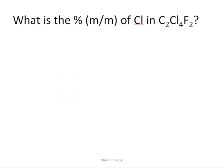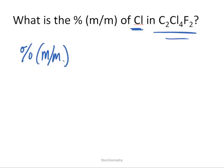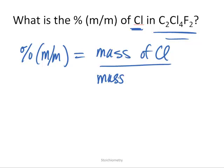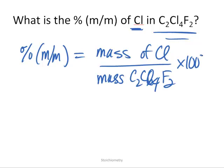One of the things we want to calculate: what is the percent by mass of chlorine in the compound C2Cl4F2? We're going to take the mass of the part — chlorine — and divide that by the mass of the entire compound. So the percent by mass would be the mass of chlorine divided by the mass of the whole compound, C2Cl4F2, multiplied by 100%.